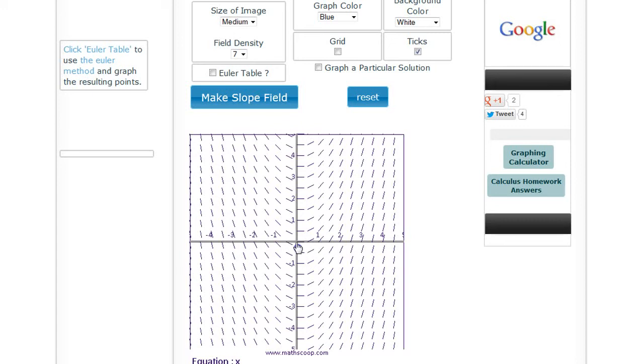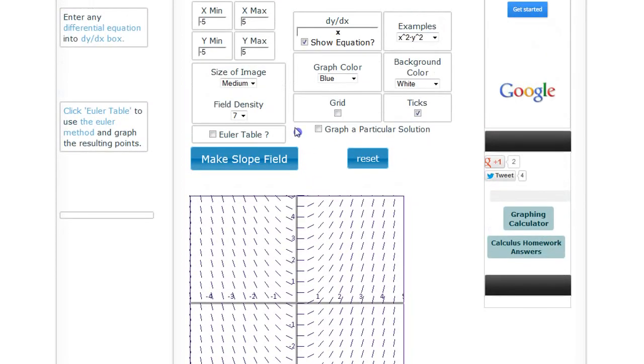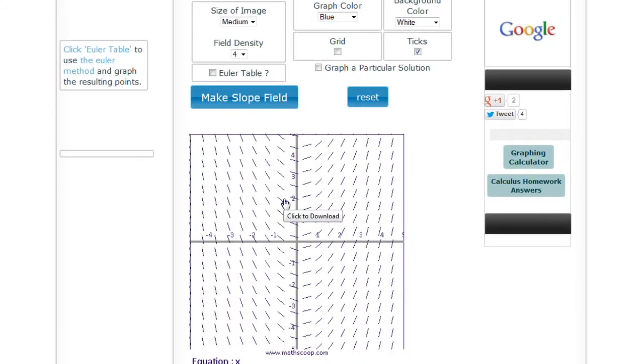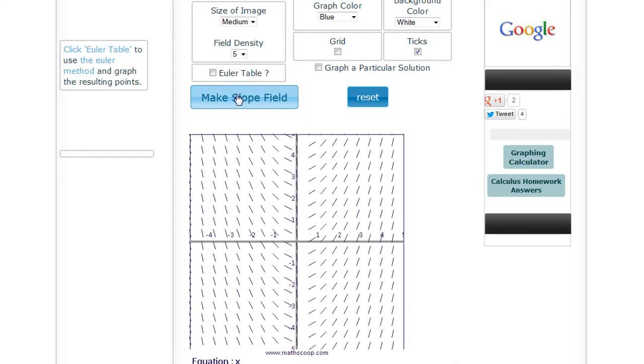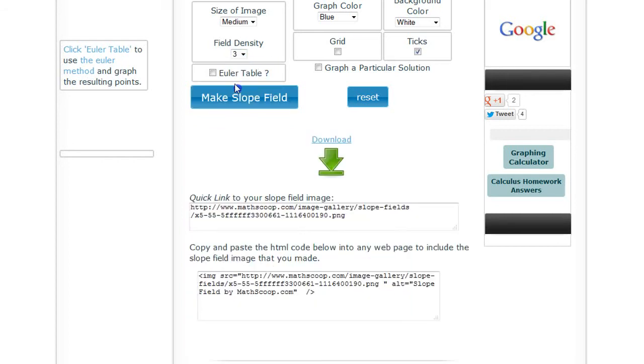I don't know what the units are or how often it does it here, but there's probably settings up here. Field density seven, or maybe let's go down to about four. Or something like that, five maybe. Five might make it better. This is calculating slopes of lines at different places.